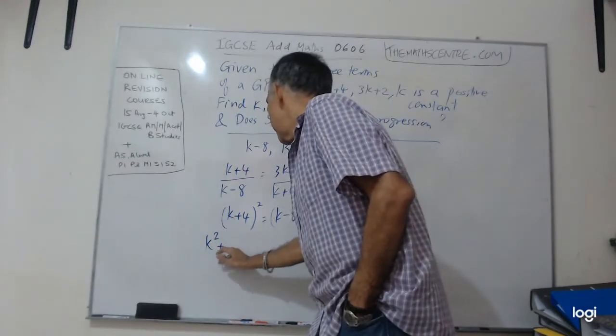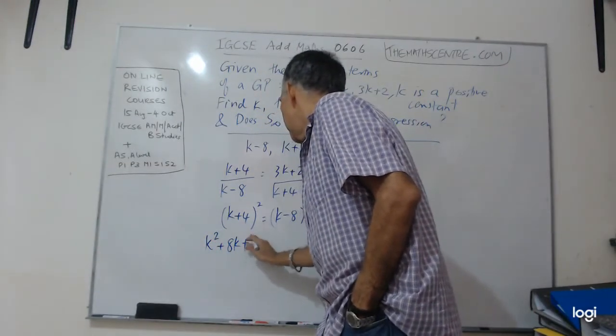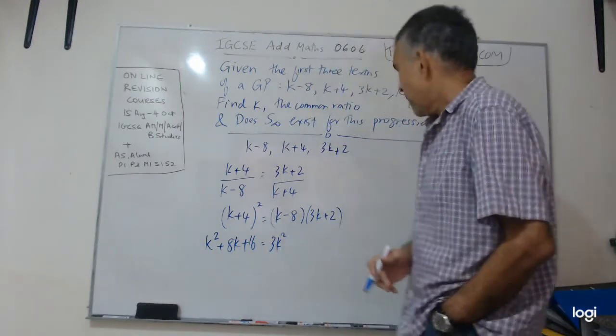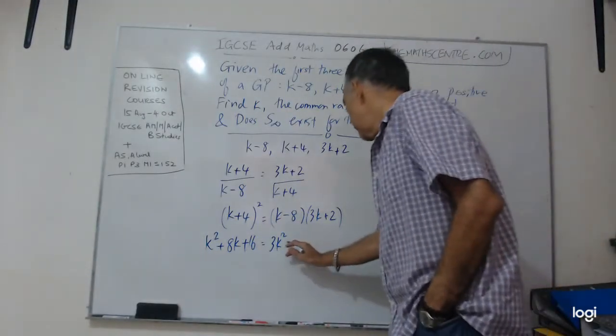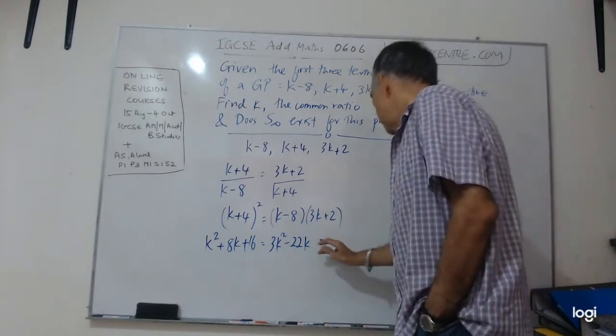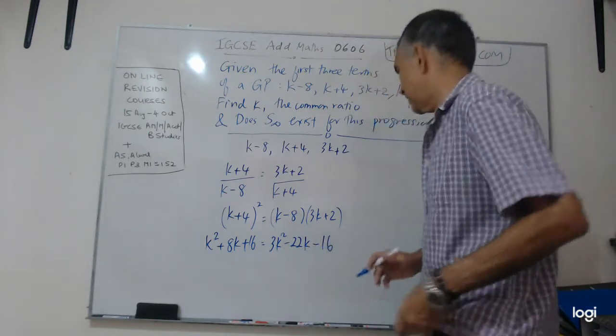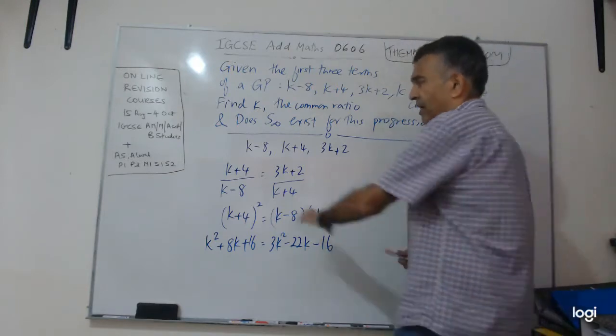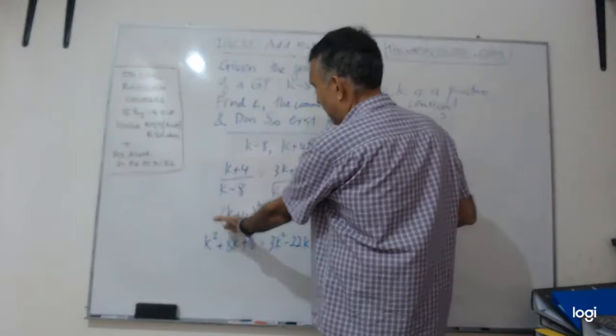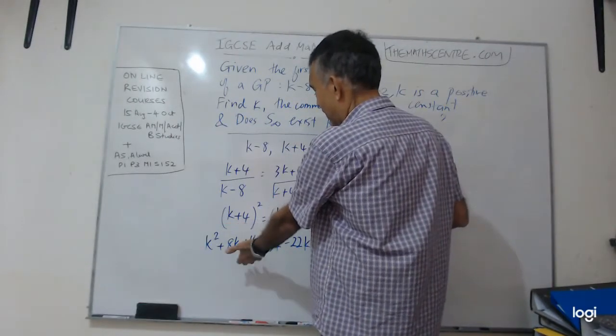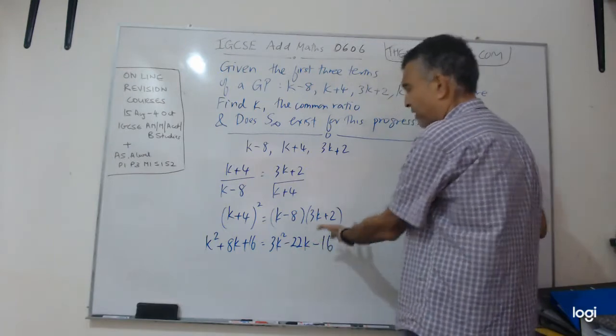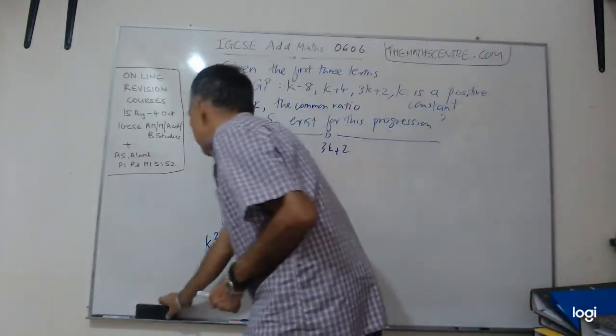Let's expand this. I have K squared plus 8K plus 16. That will be equals to 3K squared, let's see, minus 24 plus 2 will be minus 22K. Minus 8 and 2 will be minus 16. No tricks, just expanded it.